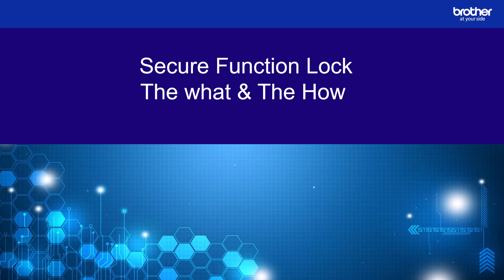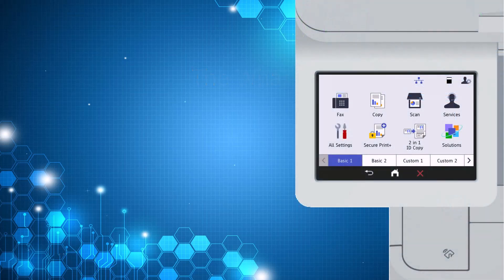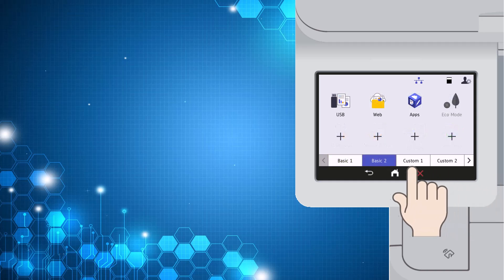Welcome to this demonstration discussing the what and how of the secure function lock feature on a Brother device. Let's look at what secure function lock looks like on a Brother device. When looking at the device's LCD screen, there are many options open to a user. We can see more options on the basic tab 2, and also the option to add more functions by pressing the plus icon on the screen.